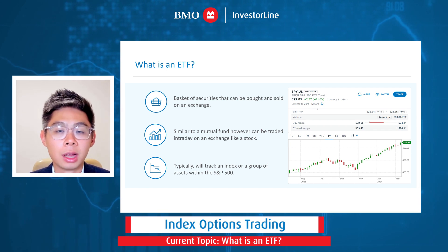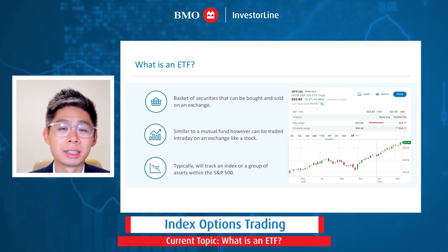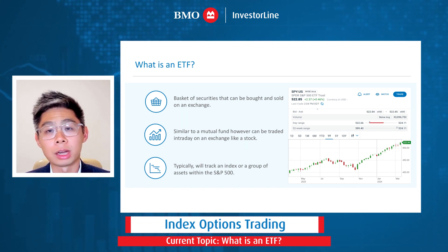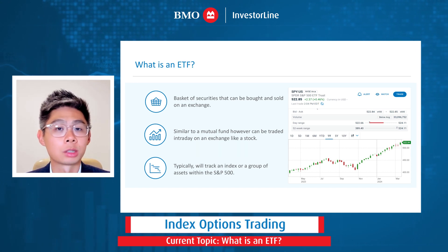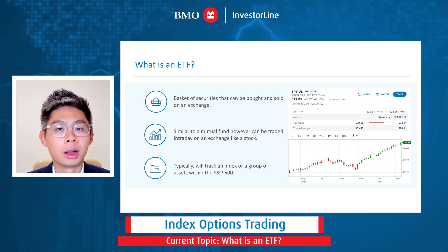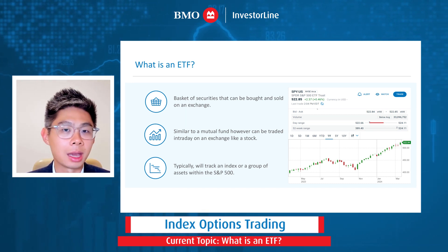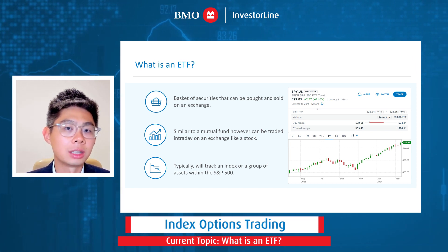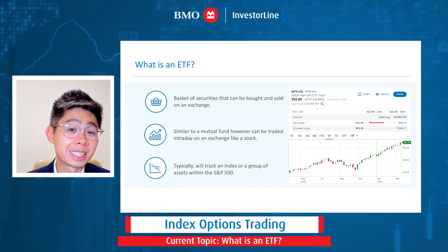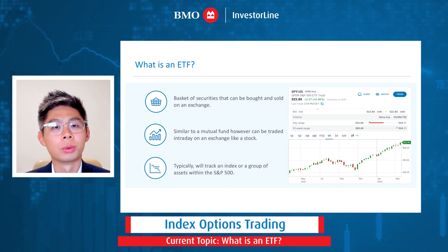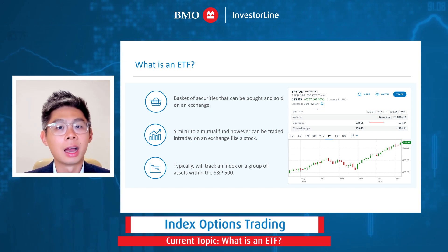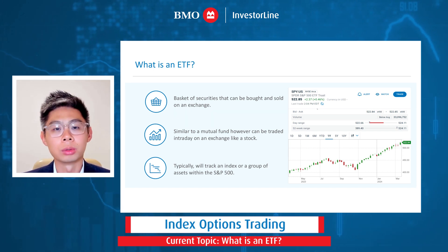There are hundreds of ETFs listed that allow you to trade different segments of the market. There are sector ETFs, ETFs that track specific currencies or specific commodities. Pretty much anything you can imagine in terms of gaining exposure to different segments of the market — chances are there is an ETF listed that allows you to gain specific exposure to a specific slice of the overall market. That's the evolution we're going to look at: indices versus ETFs and the options listed on these two types of products.